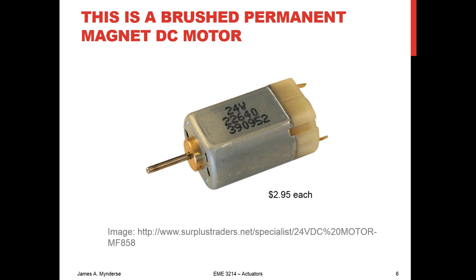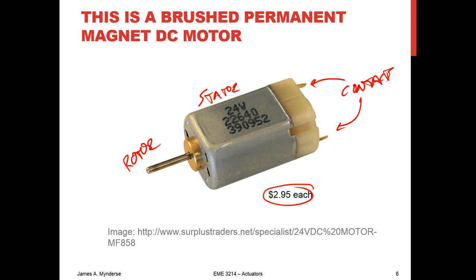This is what a standard, cheap, commercial, brushed, permanent magnet DC motor looks like today — about three dollars each. Our major elements are: a rotor (you can see the shaft sticking out), a stator, which is the stationary portion that doesn't rotate, and our contacts. Internally there's a commutator, which controls the direction of current through the windings, and the windings themselves. You apply a voltage to the contacts, hold the stator stationary, and the rotor spins. The really cheap ones are very cheap in operation too — you get what you pay for — but they all behave about the same way depending on construction.